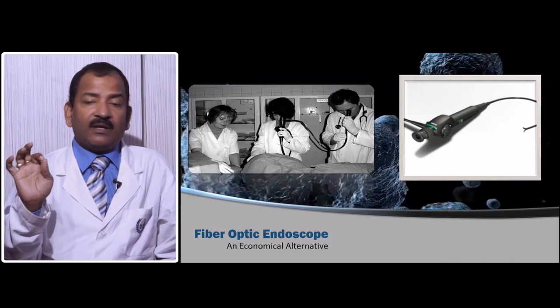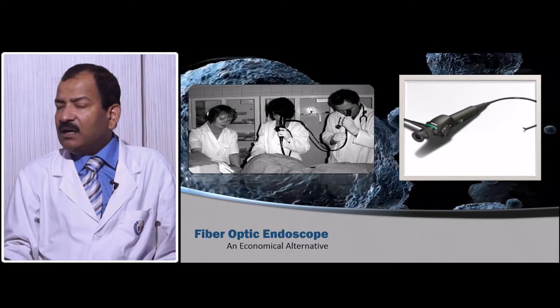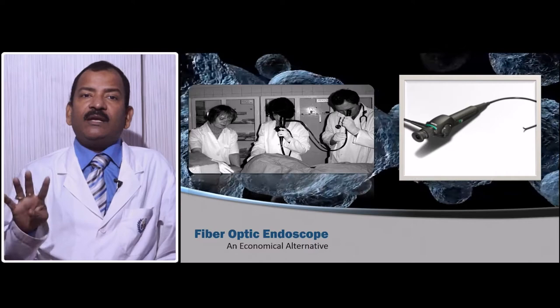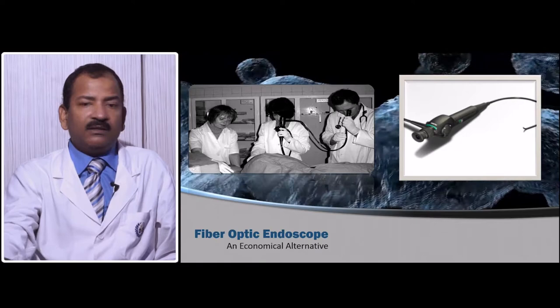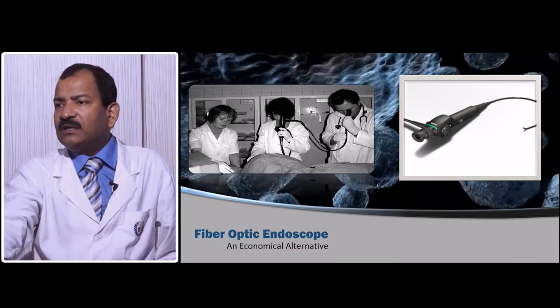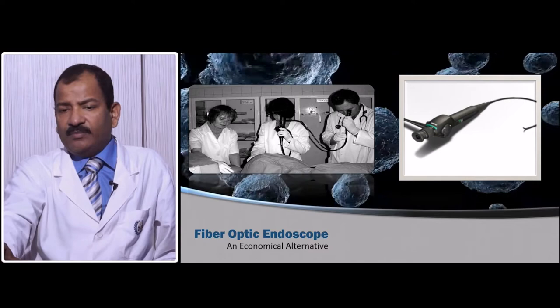The advantages of fiber optic endoscopy: it is very handy — if you are a freelancer, you can carry it in a briefcase and travel from place to place. It is also cheap; you can buy an upper GI endoscope for around 1 lakh rupees, making it a good alternative for rural areas where patients cannot pay more. Maintenance is also not risky — it is easy to maintain because there are no electronic parts and no risk of voltage fluctuation.